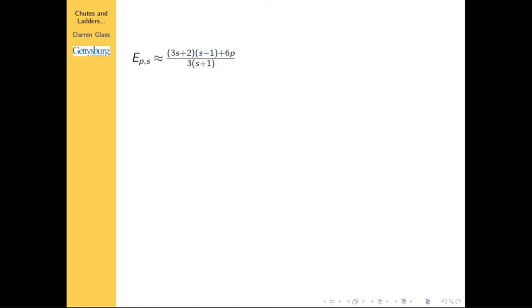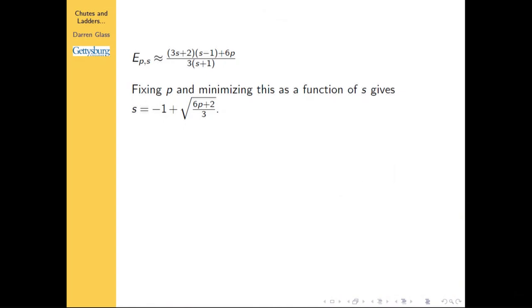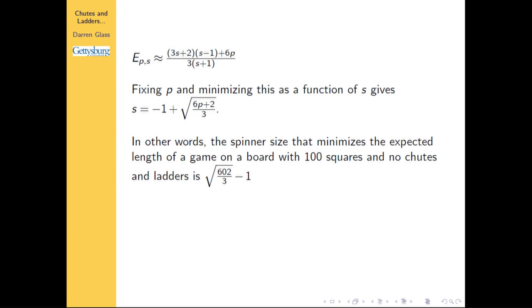You can also fix the board length and let the spinner size vary. If you minimize E(p, s) as a function of s in terms of p — in other words, for a board of 100 squares, what is the optimal spinner? — it turns out to be the square root of 60 times 2/3, minus 1, which is approximately 13.1. So the optimal spinner size is around 13. Thank you.